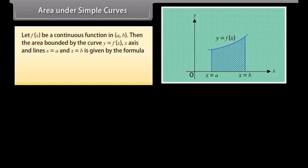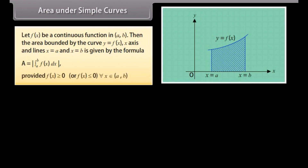Area under simple curves. Let f(x) be a continuous function in [a, b]. Then the area bound by the curve y = f(x), the x-axis, and the lines x = a and x = b is given by the formula: A = |∫ from a to b of f(x) dx|, provided f(x) ≥ 0 or f(x) ≤ 0 for each x in [a, b].